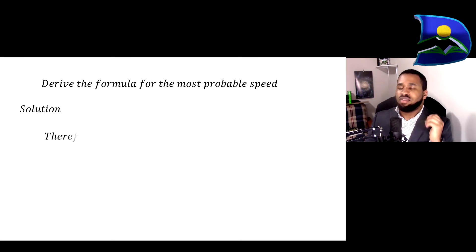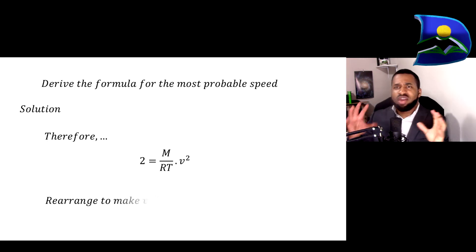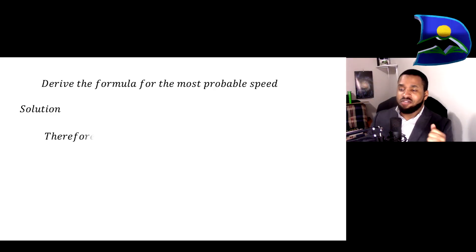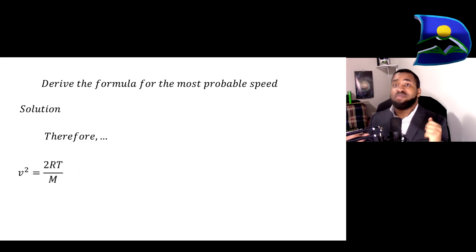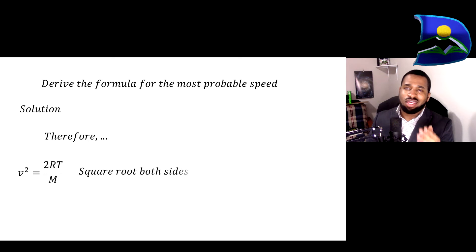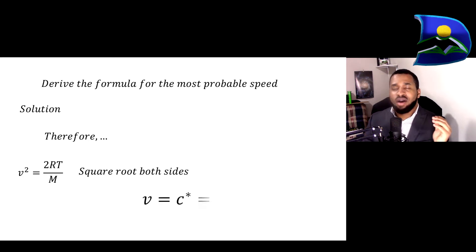We arrive at: 2 equals (M over RT) times v squared. Rearranging and making v the subject of the formula, we get v squared equals 2RT over M. Performing the square root on both sides, our v — which we represent as c-star — is equal to the square root of 2RT over M.